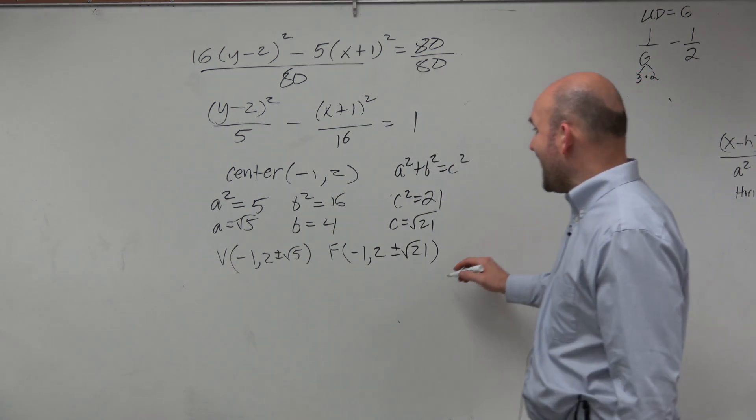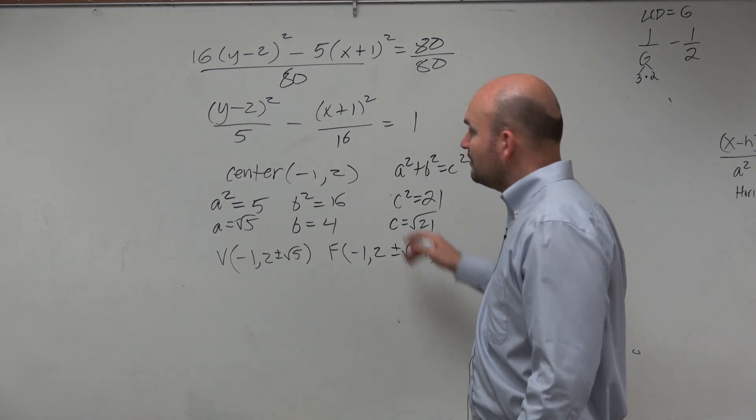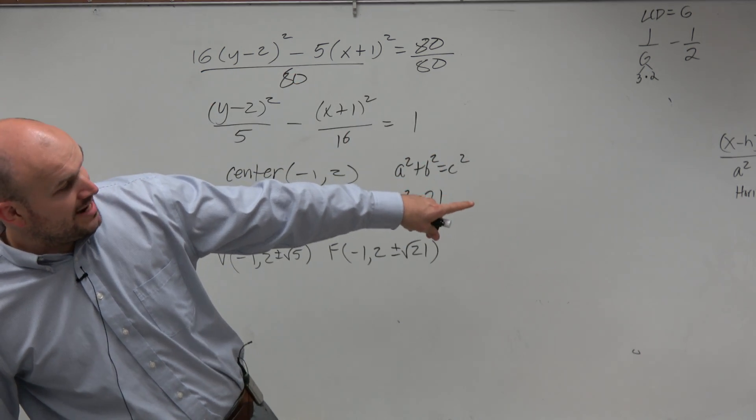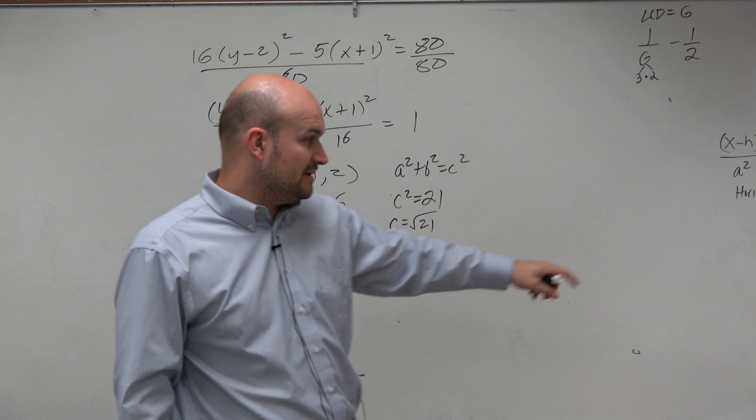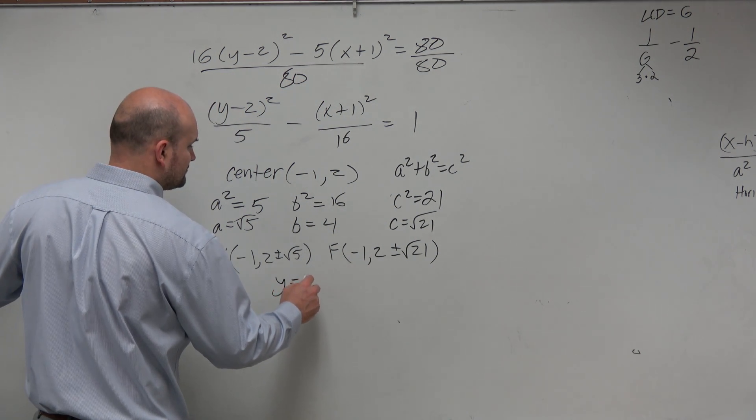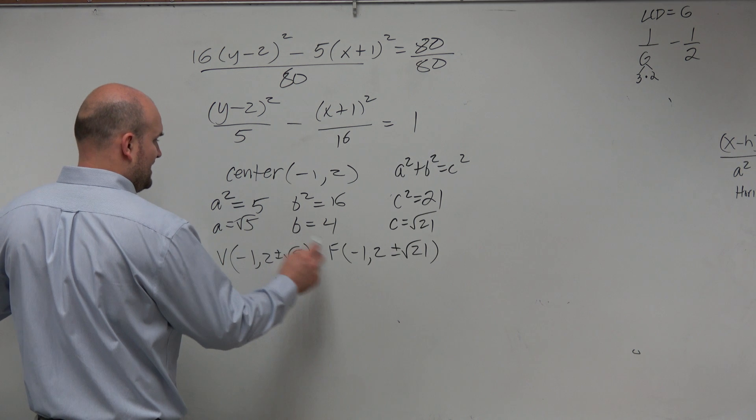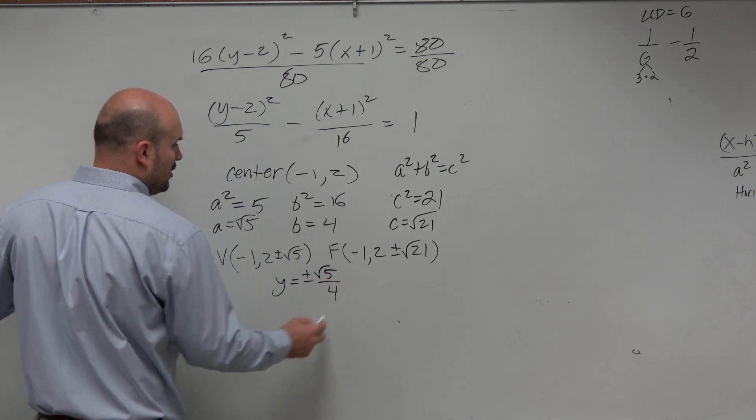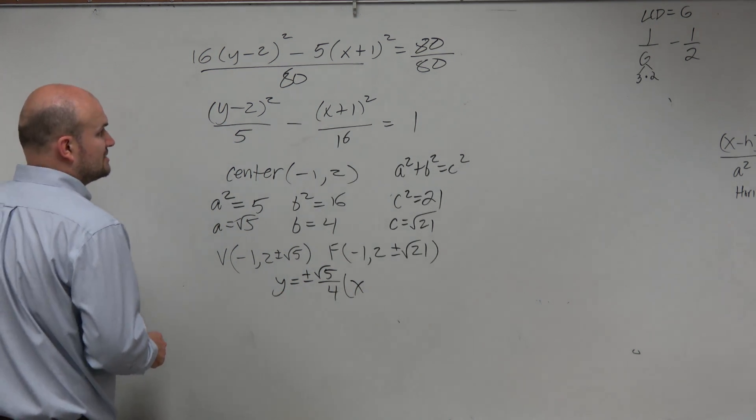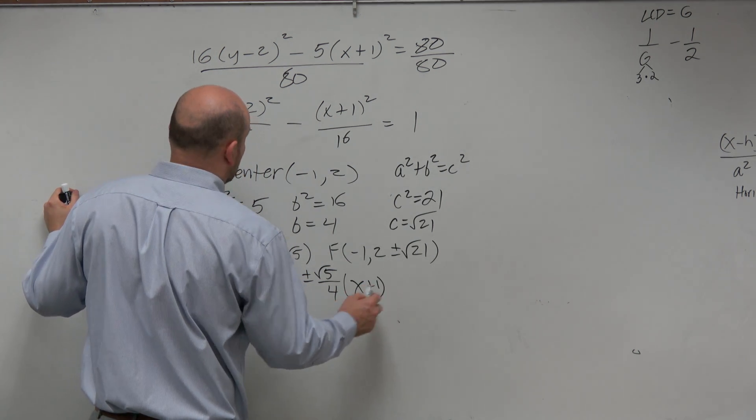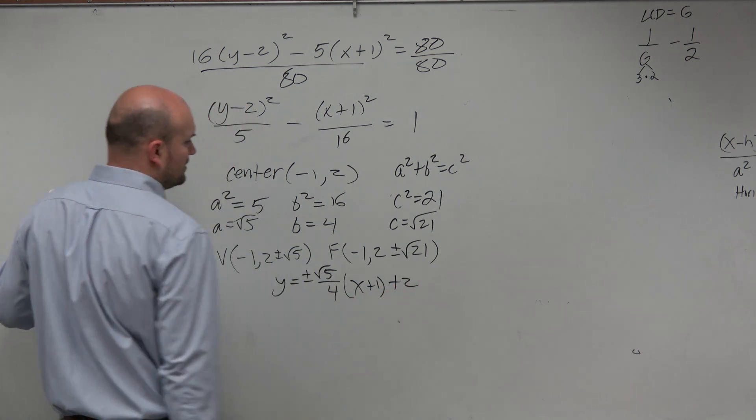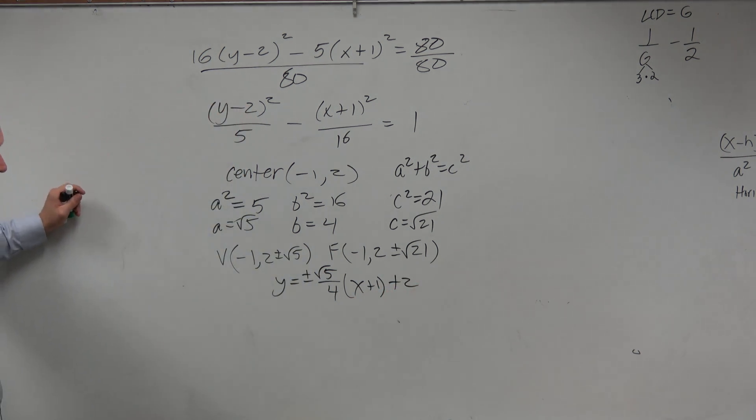And then if I want to find my asymptotes, vertical transverse axis means my equation is y equals plus or minus a over b times (x minus h). So that's going to look like this. Y equals plus or minus my a, which is square root of 5, over b times x minus h. So that's going to be x plus 1. And then plus k, so that'd be plus 2. So that'd be the equation of my asymptote.